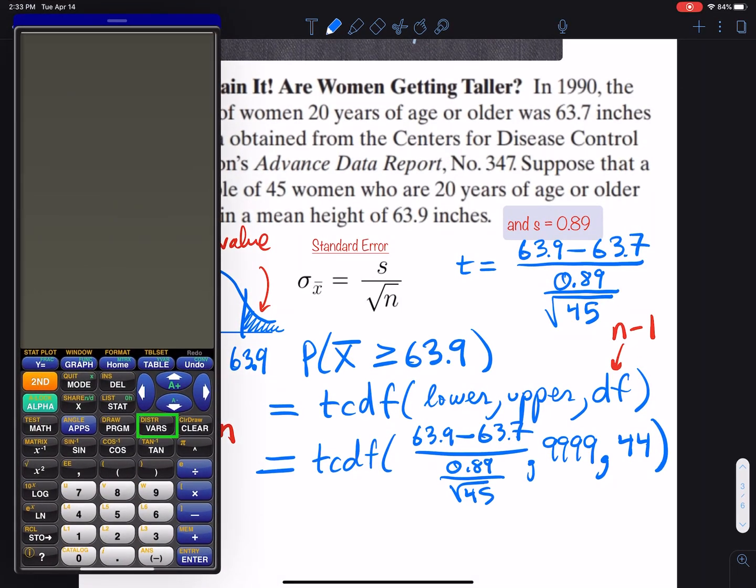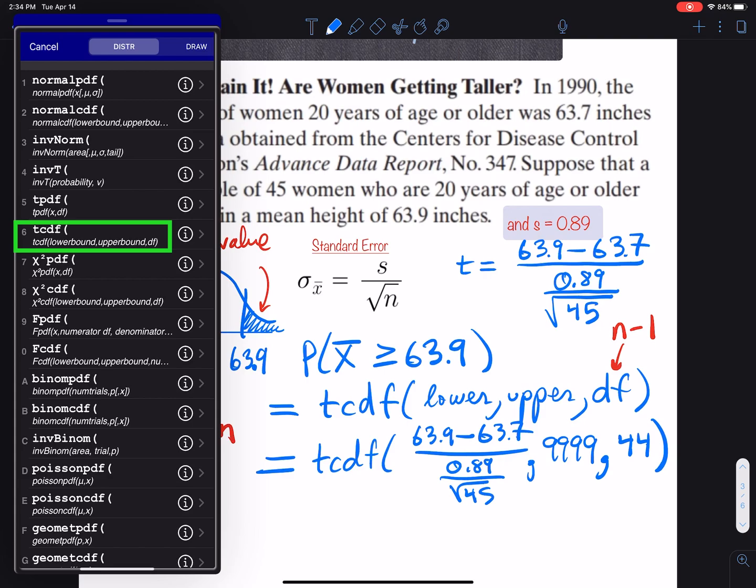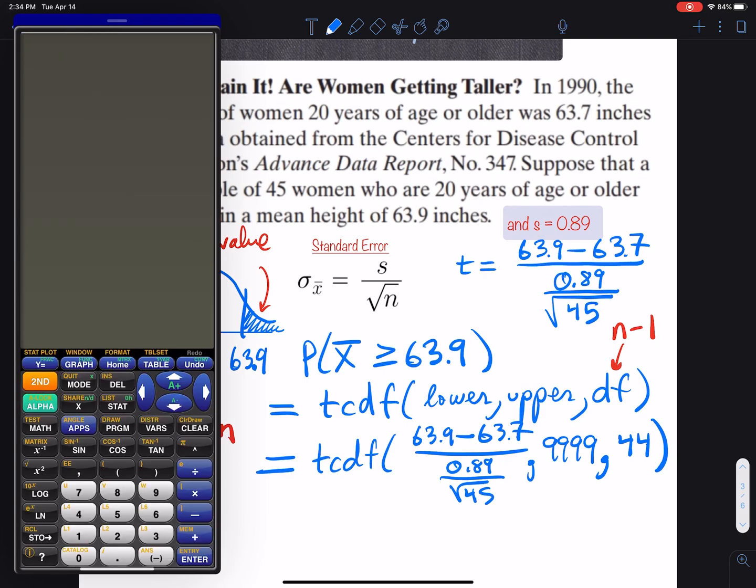Before using TCDF, I'll first find (63.9 - 63.7) divided by (0.89/√45). This is tricky because it's a complex fraction. The result is 1.50746, and I can store that into variable x.